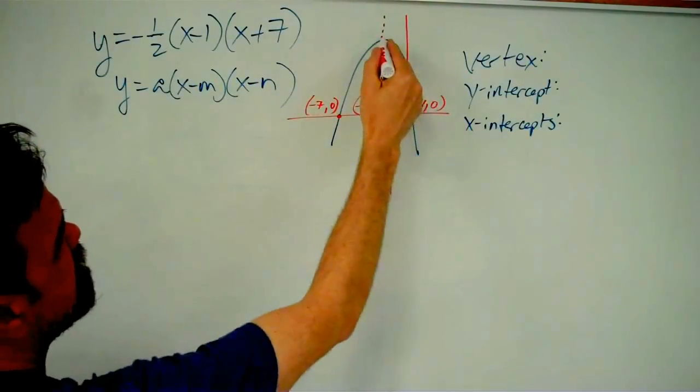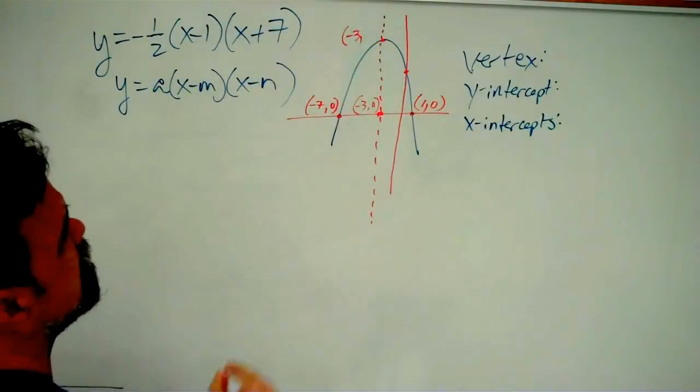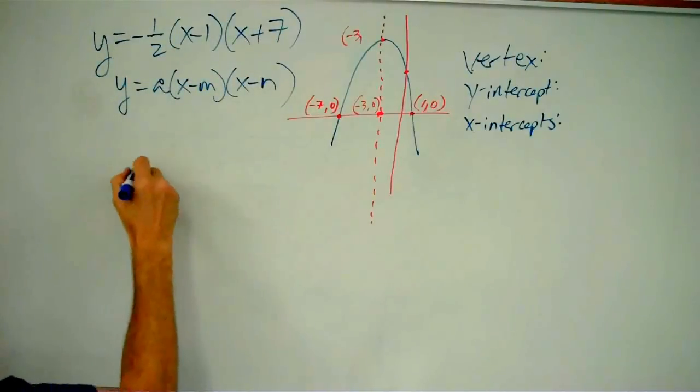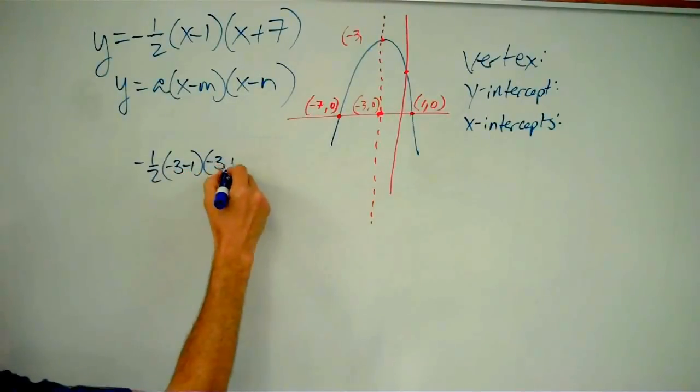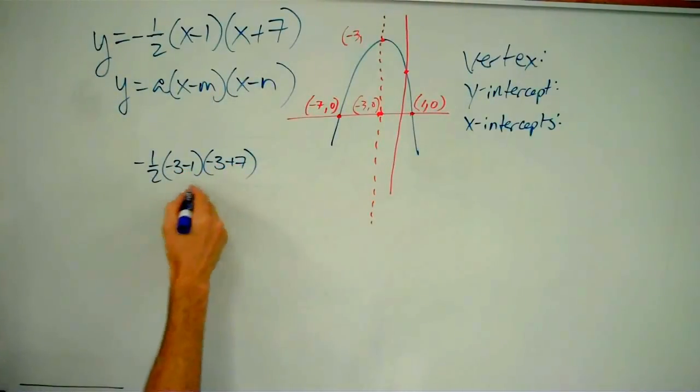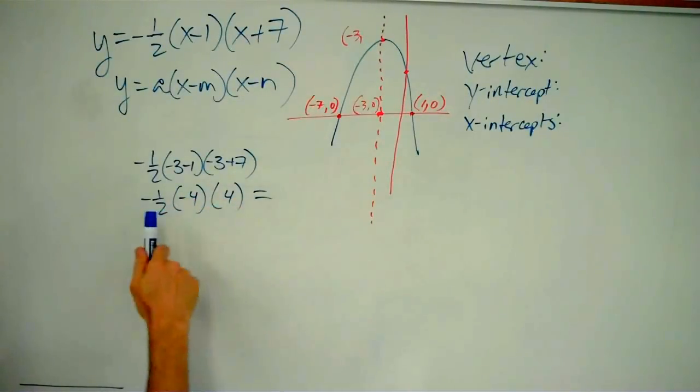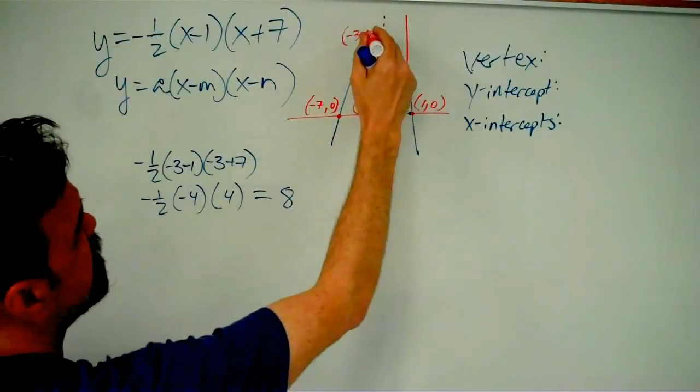And that gives me the x-coordinate of my vertex, negative three. How do you get the y-coordinate? Plug it into your function. Negative one-half times negative three minus one times negative three plus seven gets me negative one-half times negative four times positive four, which is negative one-half times negative sixteen, which is positive eight.